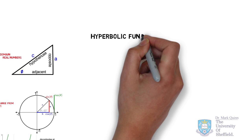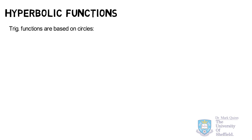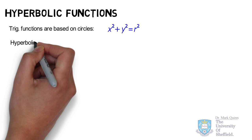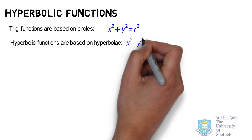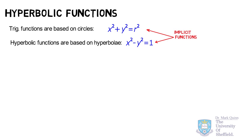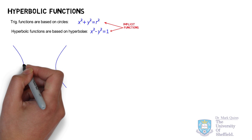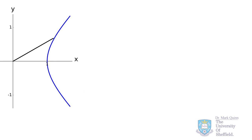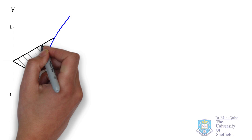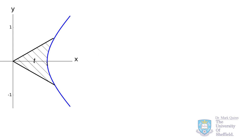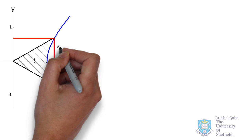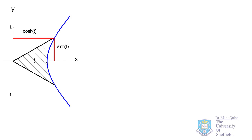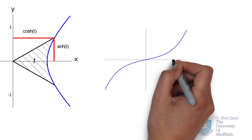Next, let's look at hyperbolic functions. Whereas standard trigonometry functions are based on the equation of the circle, hyperbolic functions are based on the equation of the hyperbola: x² minus y² equals 1. The geometry defined by hyperbolic functions has numerous applications in physics. To define these functions, we use a unit hyperbola, taking just the right-hand side. For any point on the curve, we define an area from the origin to that point — referred to as the hyperbolic angle t. The domain spans all real numbers between minus infinity and plus infinity.